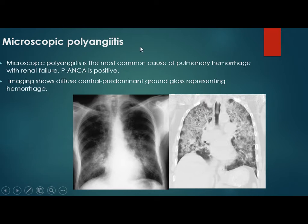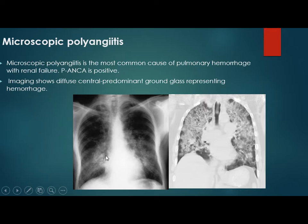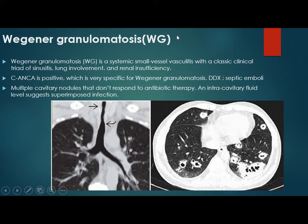In microscopic polyangiitis, this is the most common cause of pulmonary hemorrhage in cases with renal failure. P-ANCA is also positive. On imaging, we see diffuse central predominant ground glass representing the hemorrhage — haziness that looks like pulmonary edema but without cardiomegaly or pleural effusion. In Wegener's granulomatosis, this is a systemic small vessel vasculitis. The classical triad is sinusitis, lung involvement, and renal insufficiency. C-ANCA is positive and is very specific for Wegener's.